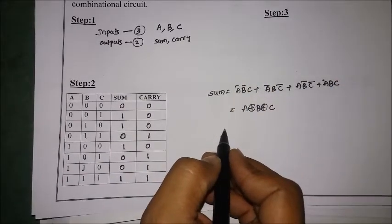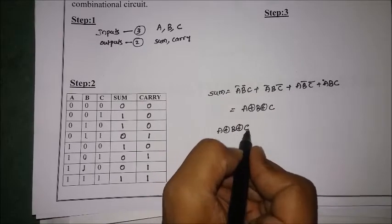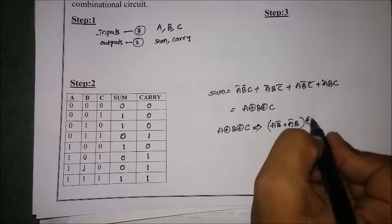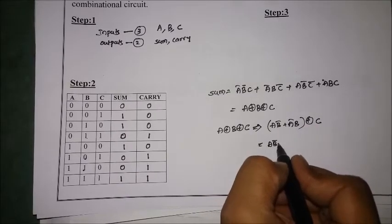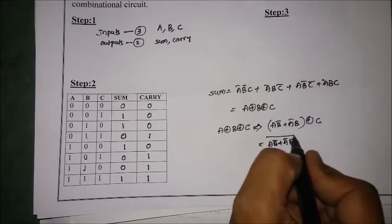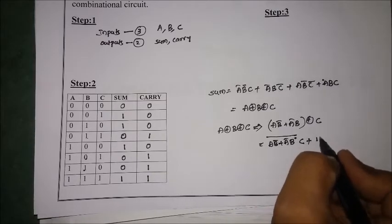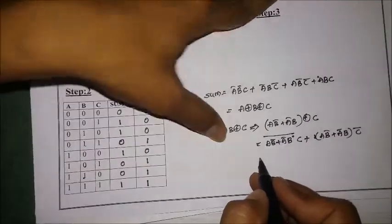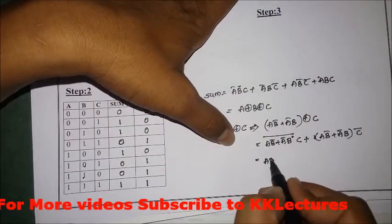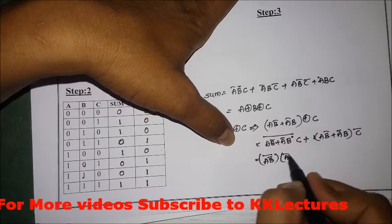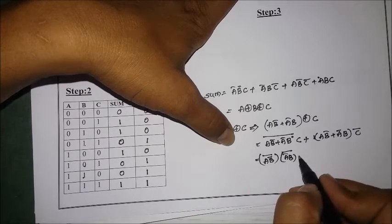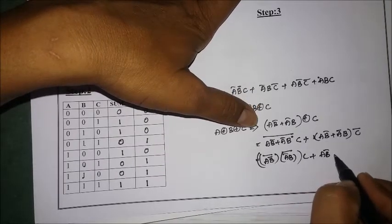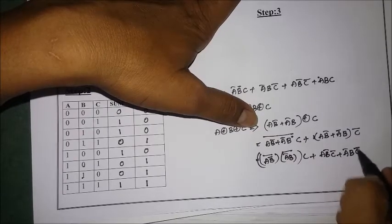Let us expand the sum term A⊕B⊕C. That implies (A·B̄ + Ā·B) ⊕ C, which equals (A·B̄ + Ā·B)̄ · C + (A·B̄ + Ā·B) · C̄. Applying De Morgan's theorem, (A·B̄ + Ā·B)̄ becomes (Ā + B) · (A + B̄), which expands to Ā·B̄ + Ā·A + B·B̄... giving us A·B̄·C̄ + Ā·B·C̄ after distributing with C̄.